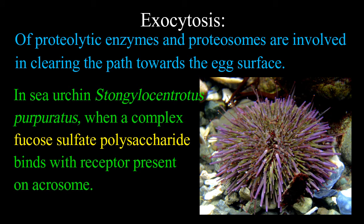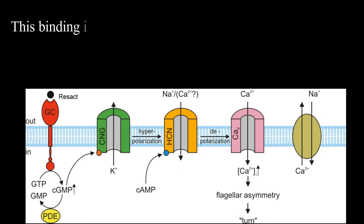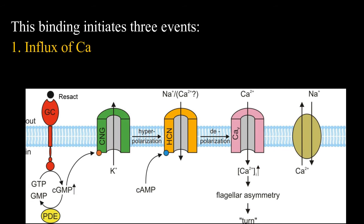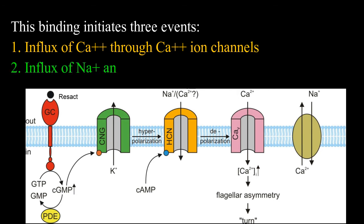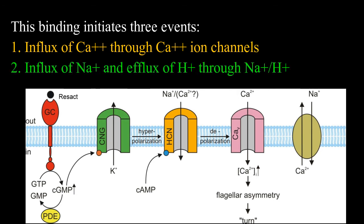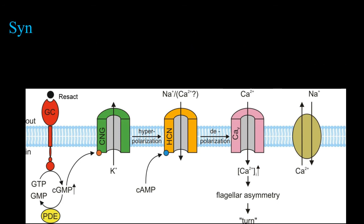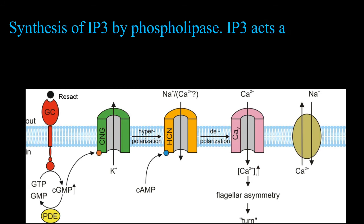In the sea urchin Strongylocentrotus purpuratus, when a complex fucose sulfate polysaccharide binds with a receptor present on the acrosome, this binding initiates three events: influx of calcium through calcium ion channels, influx of sodium and efflux of proton through sodium-proton antiporter, and synthesis of inositol triphosphate by phospholipase.